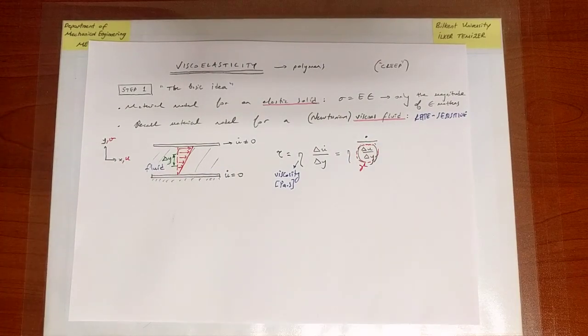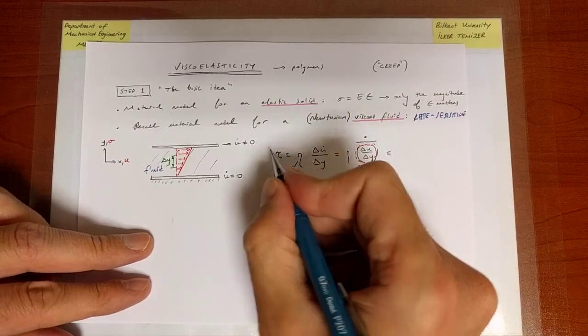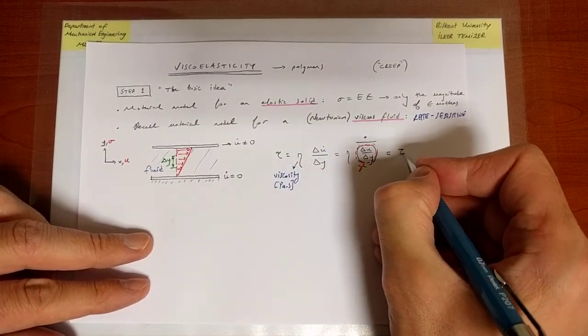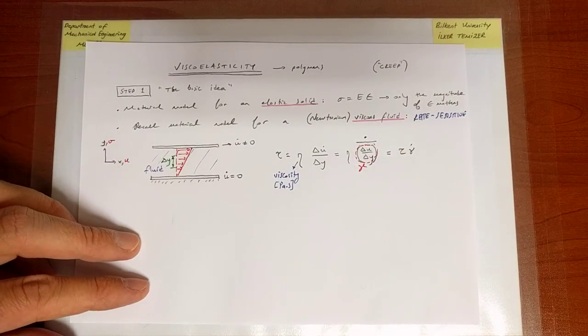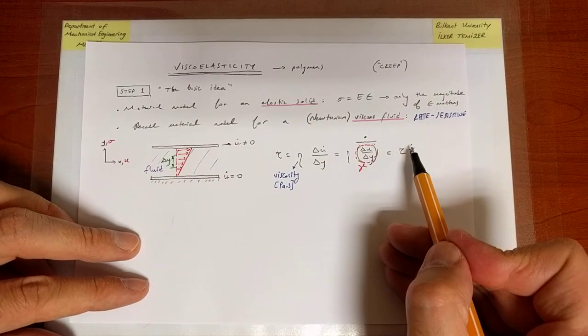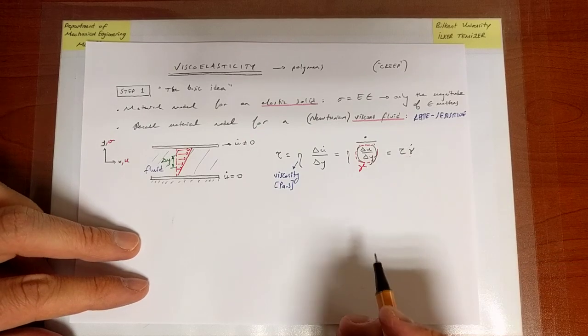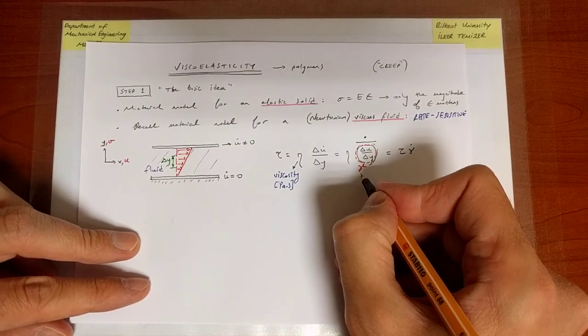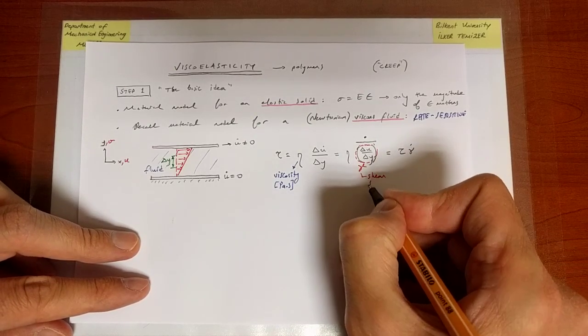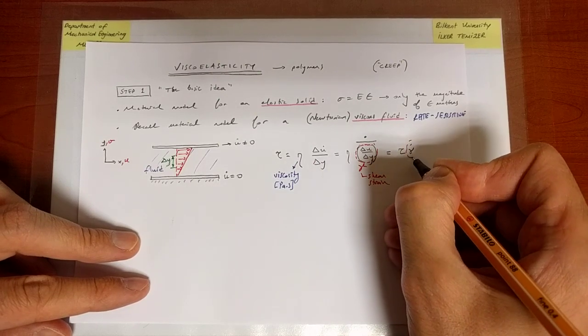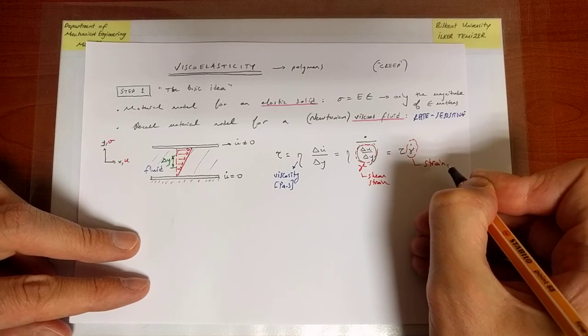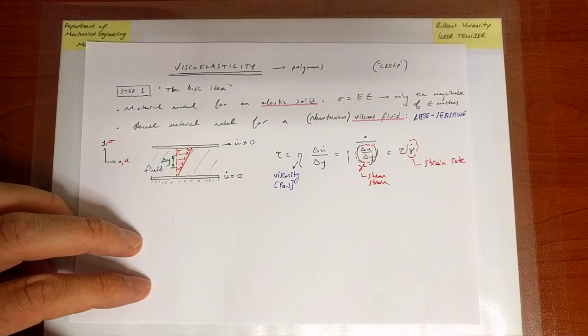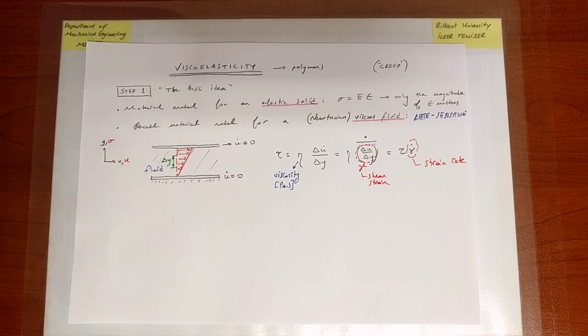So ultimately, what I see is that the amount of stress in a fluid can be represented as tau multiplying the time rate of change, the time derivative of the shear strain. So this is the shear strain. And this quantity here, the rate of shear strain, it's called the strain rate.